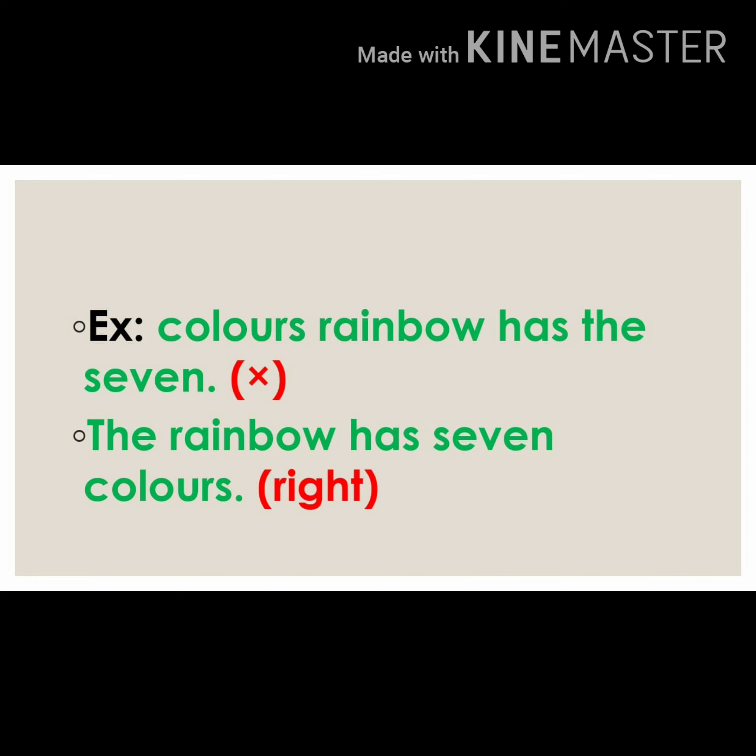So number one is not a sentence, but number two is a sentence. You can see a group of words are there, but when you arrange them in proper order, that is called a sentence.